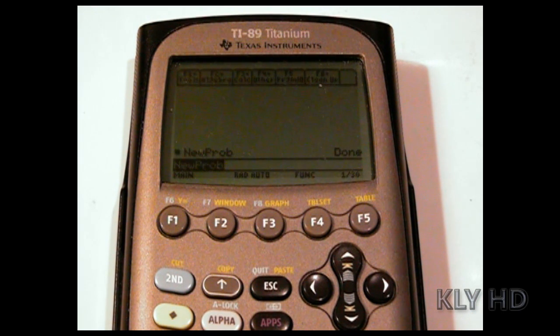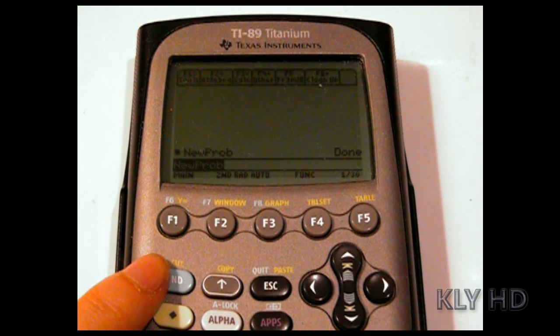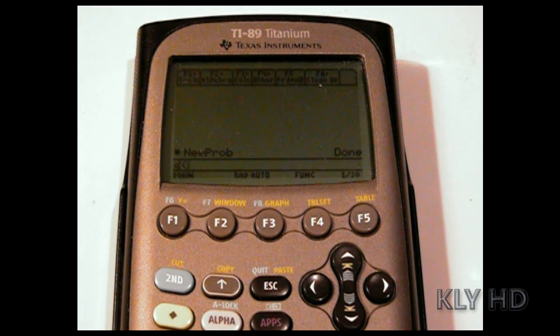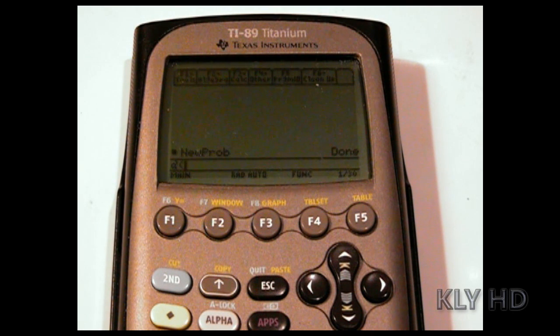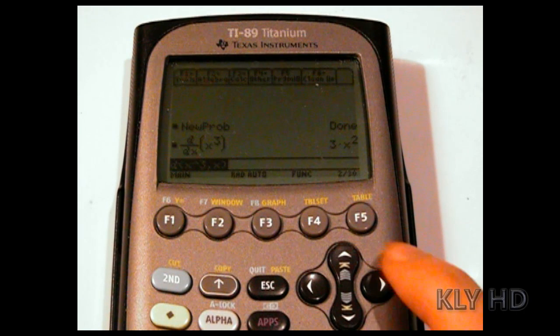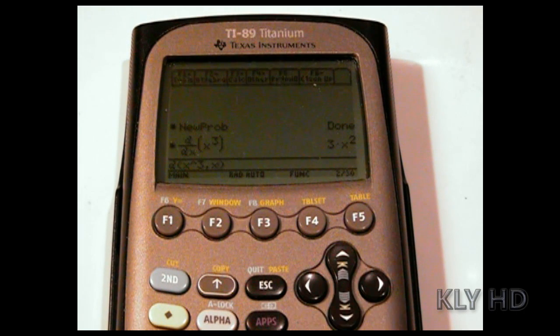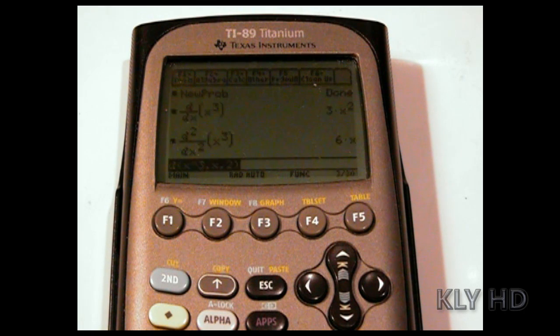To find the derivative of a function, you will type in the D by hitting 2nd and the 8th key. For the next few examples, I will just use x to the 3rd, but any single variable function can be typed in its place. Let's start by typing D x cubed comma x because you are solving with respect to x. If you wanted the nth derivative, add a comma n, n being a whole number. I will use 2 to find the 2nd derivative of this function.